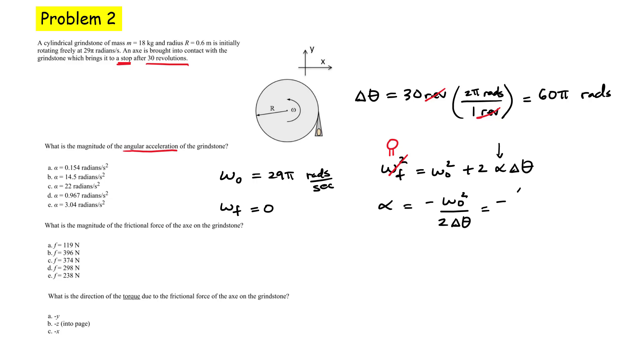Now we substitute our values. Just be careful when you do this. Here you get 29π, but you have to square everything, divided by two times 60 multiplied by π. If you put this in the calculator, this is going to give me a negative number. That simply tells me that it slows down. But if we're looking for the magnitude of the angular acceleration, you should get something like 22 radians per second squared. And that corresponds to choice C.